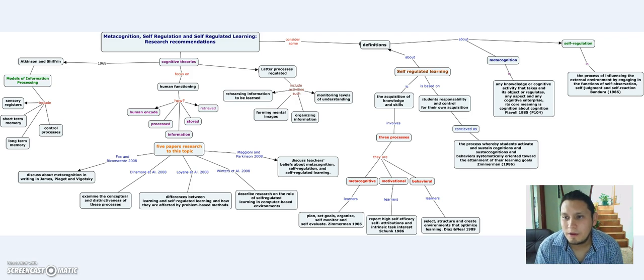Another one is self-regulation. We can talk about Bandura in 1986, which is the process of influencing the external environment by engaging the functions of self-observation, self-judgment, and self-reaction. He said that external and internal factors were both important.